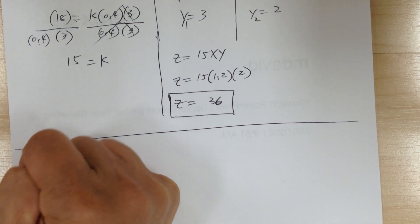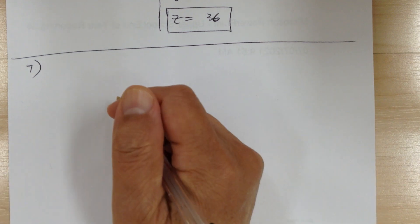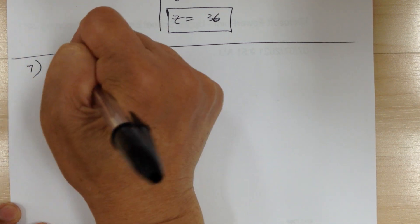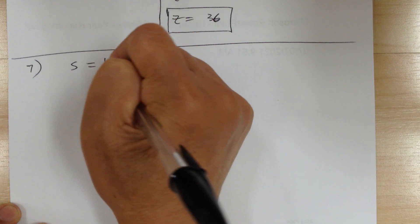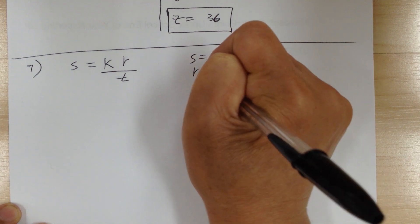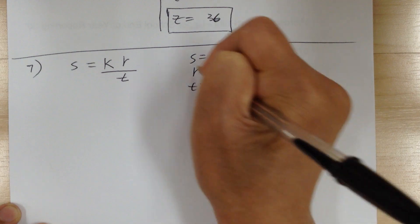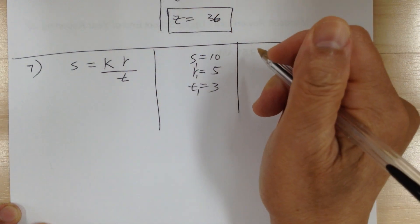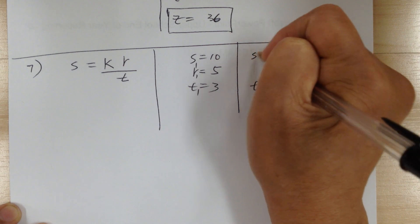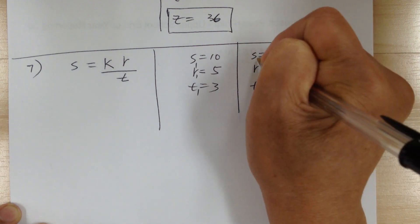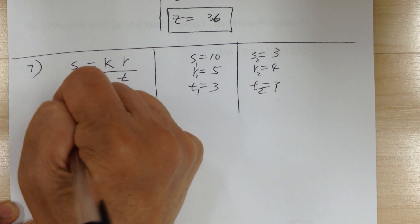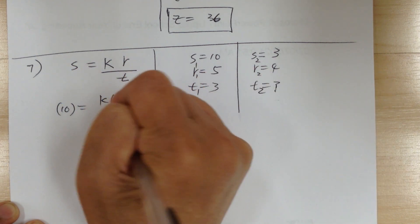Let's go to number 7. If s varies directly as r and inversely as t. S equals 10, r equals 5, and t equals 3 — that's case 1. For case 2, find the value of t where s equals 3 and r equals 4. Substitute everything to get k: 10 equals k times 5 over 3.